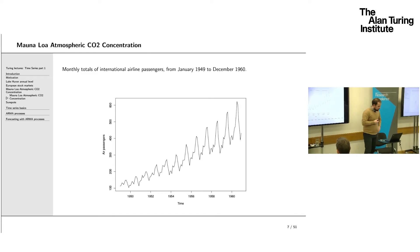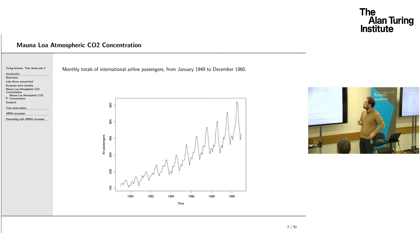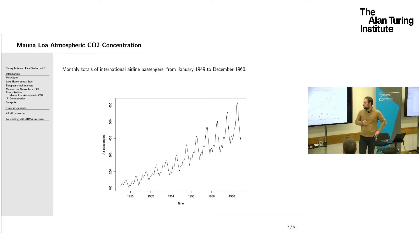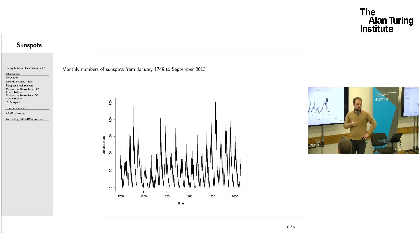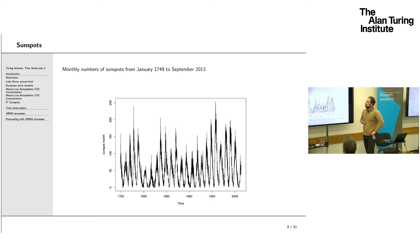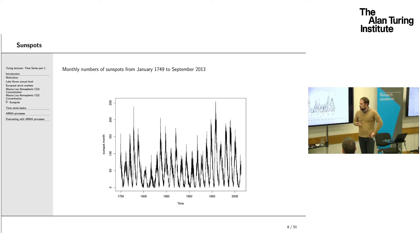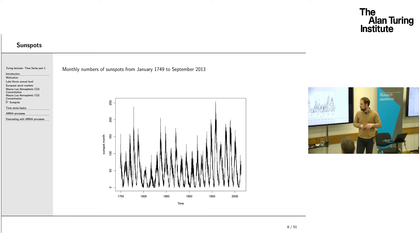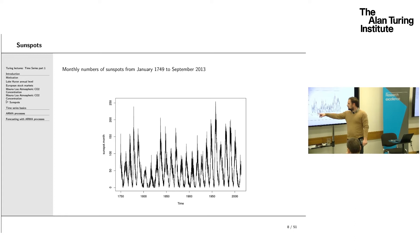Here are airline passenger data — monthly totals in millions from 1949 to 1960. There is an increasing trend in the number of passengers, reflecting the effect of technology. And here is the number of sunspots: sunspots appear on the sun with roughly an 11-year cycle, and these are monthly totals plotted over time. There is a distinct cycle appearing in the series, though no evident trend.